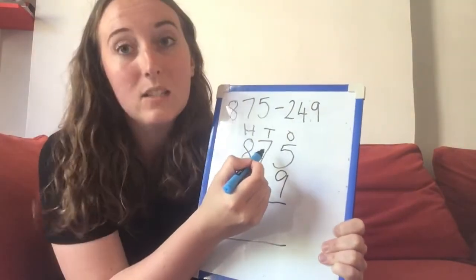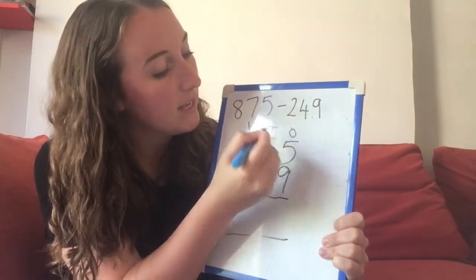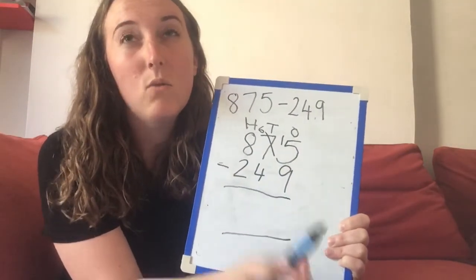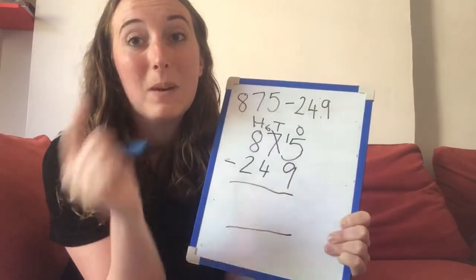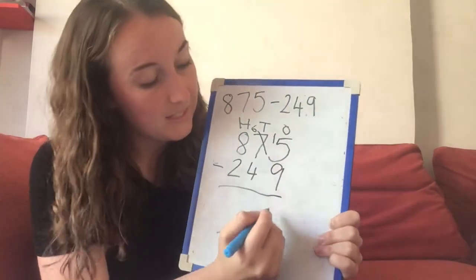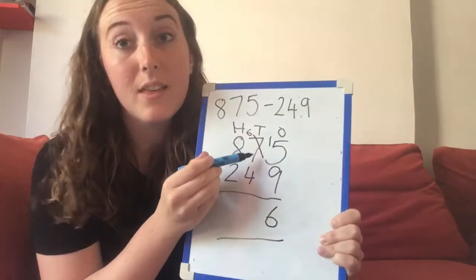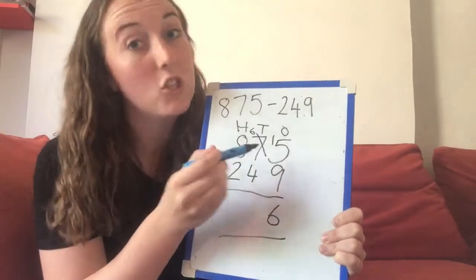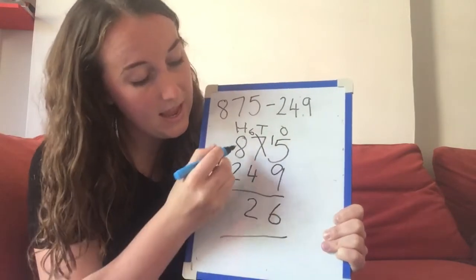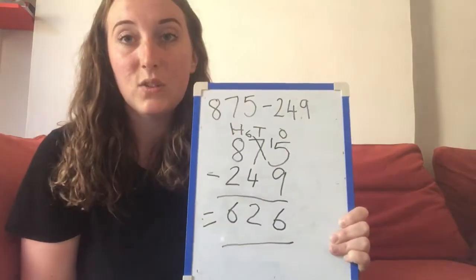So I go over to my tens column and exchange one of those tens for ten ones. I change my 7 tens into 6 tens and put my ten in the ones column. Now my calculation is 15 take away 9. I know that 15 take away 10 would be 5, but 9 is one less so it must be an extra one — so 15 take away 9 is 6. Next I go to my tens column. Remember it's not 7 tens anymore — it's 6 tens because I exchanged one into the ones column. So 6 tens take away 4 tens is 2 tens. Then 800 take away 200 is 600. So my answer is 626.